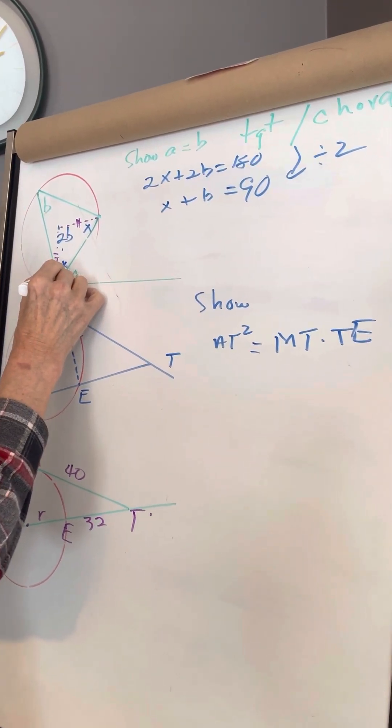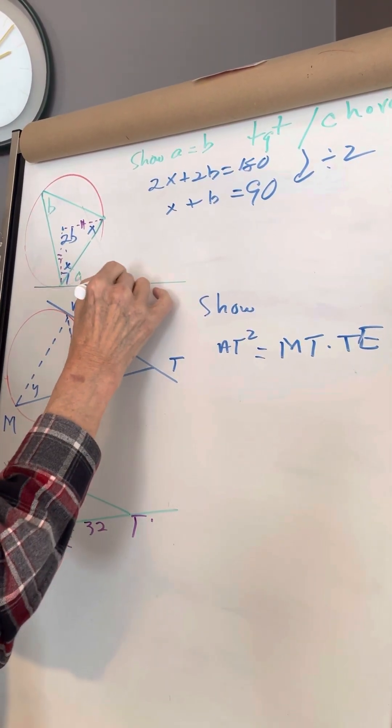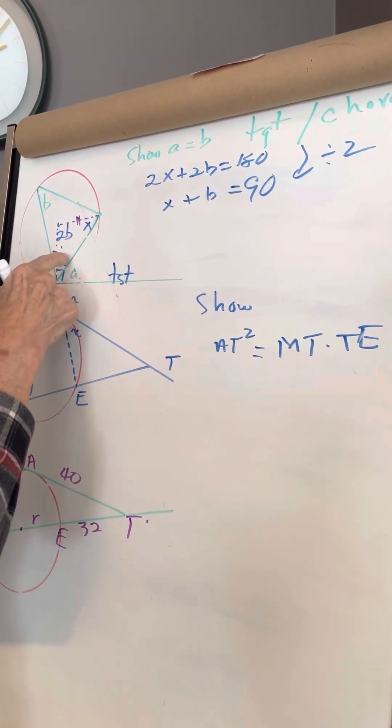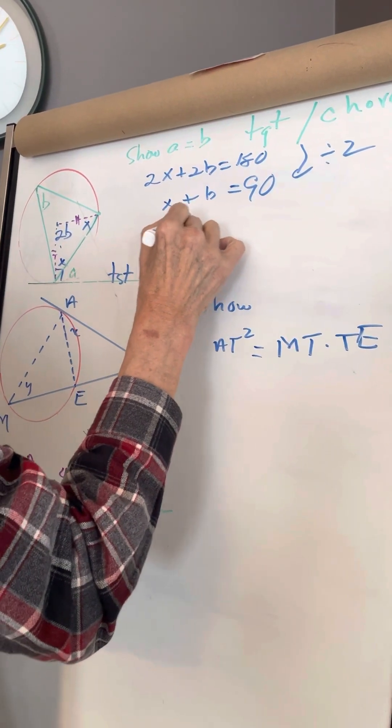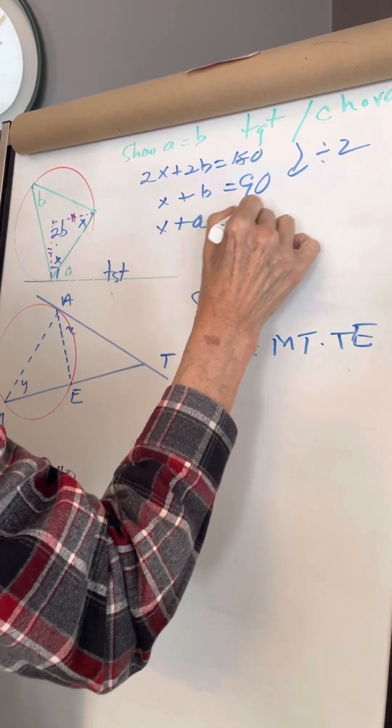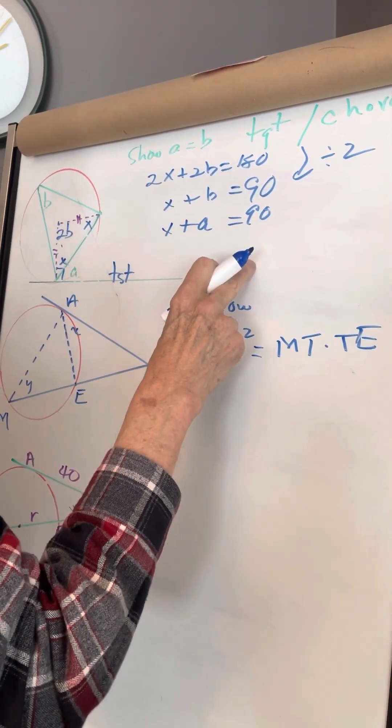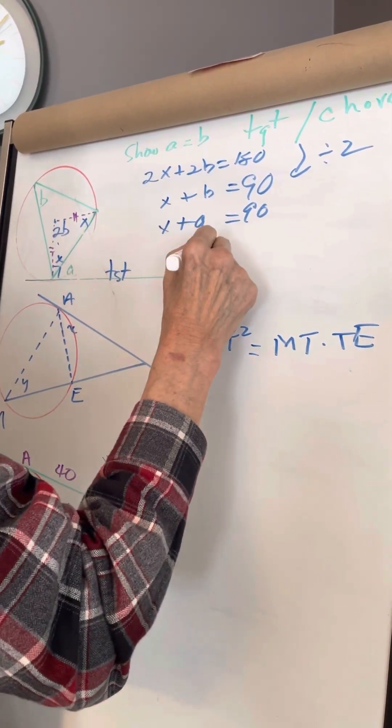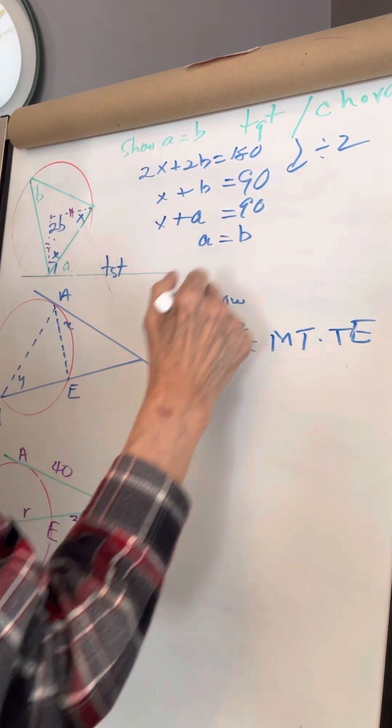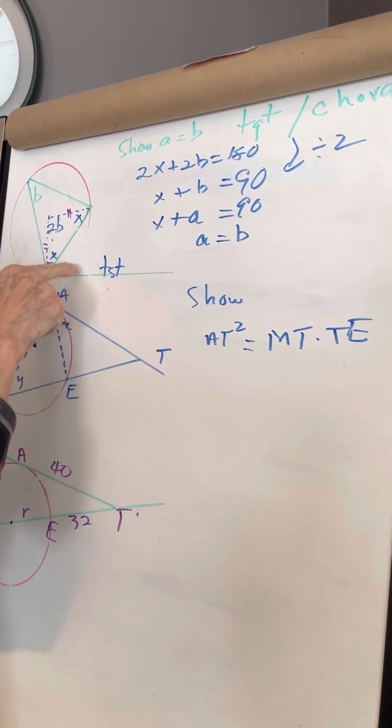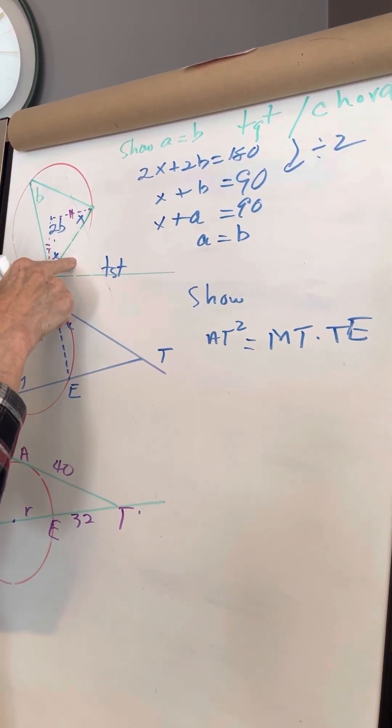And therefore, by the axiom of equality, a equals b, and therefore the angle between the tangent and the chord is equal to the inscribed angle.